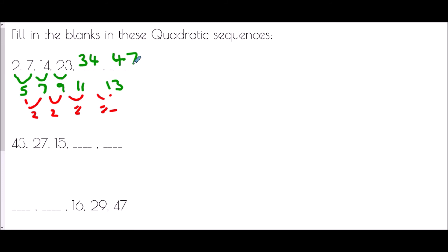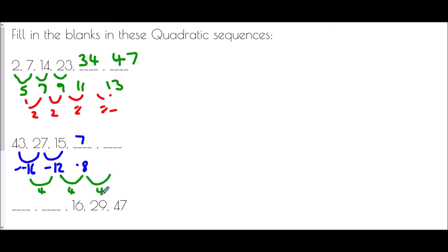In the next one, the sequence is actually decreasing — that's fine. The first difference is down by 16, then down by 12, so the difference between differences is 4. The next term goes down by only 8, so 15 take away 8 is 7. Then it goes down by only 4, so 7 take away 4 is 3.